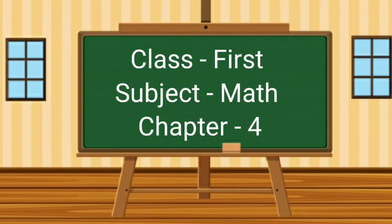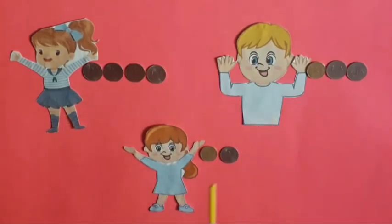Class 1st, Subject: Math. Today we will learn to take the right valued group of coins according to the given value. See kids, they are Manmeet, Arshdeep and Komal. They have some rupees in the form of coins. Let's see how many rupees they have.